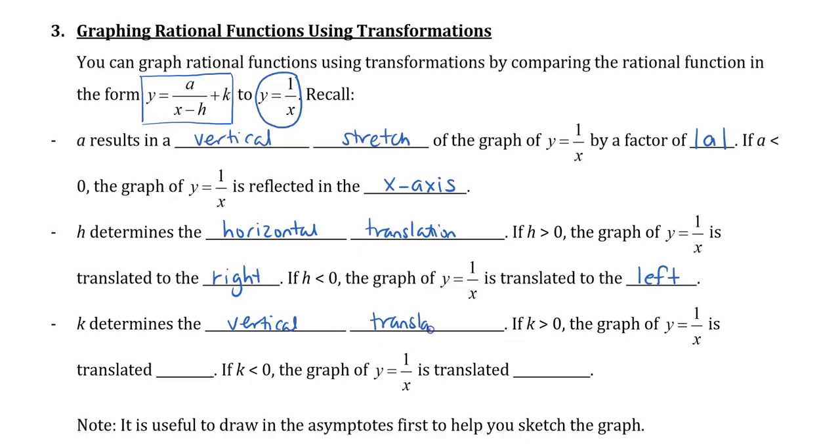If k is greater than 0, the basic graph is translated up. If k is less than 0, the graph is translated down.